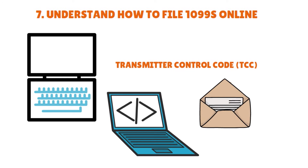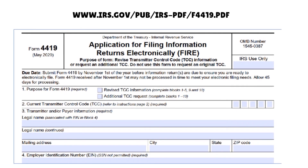To set up a FIRE account — FIRE stands for Filing Information Returns Electronically — the link to Form 4419 is www.irs.gov/pub/irs-pdf/f4419.pdf. On line one, put the purpose of the form — in this case, select 'additional TCC request.' On line two, put the current Transmitter Control Code. Line three: the legal name of your company and mailing address. Line four: your employer identification number — note that your Social Security number is not permitted here, as the FIRE system is only for companies.